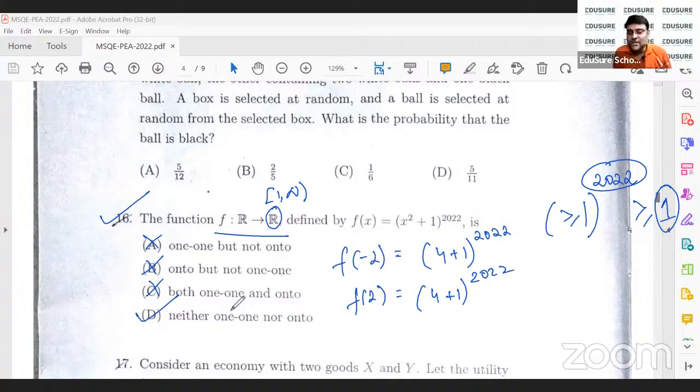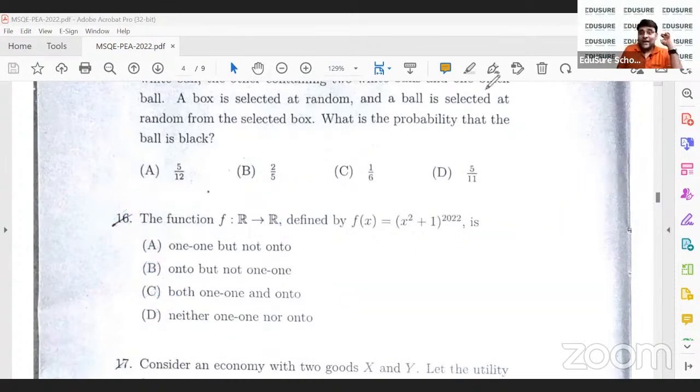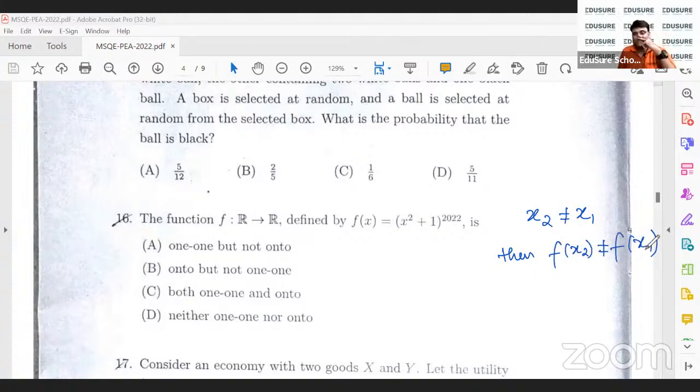You can also think about this problem by the classical definition where we check whether the function is 1 to 1 or not. And that is, we take two different values x2 not equal to x1. Then, if the function is 1 to 1, fx2 should also not be equal to fx1. If x2 not equal to x1, then fx2 also not equal to fx1. Then, the function is called 1 to 1.